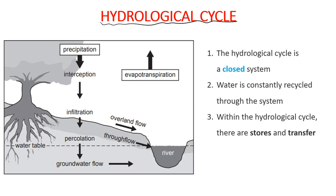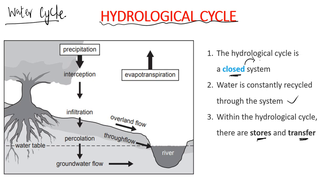The next thing we need to look at is the hydrological cycle, also known as the water cycle. The hydrological cycle is a closed system because the amount of water on Earth has never increased — it has been moving from one phase to another, constantly recycled. Within the hydrological cycle there are stores and transfers.